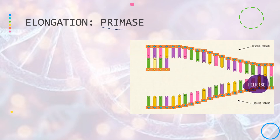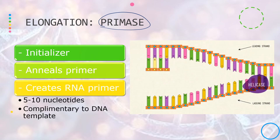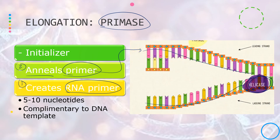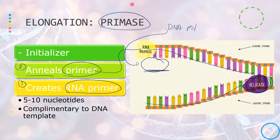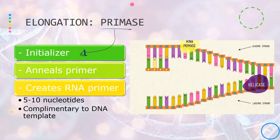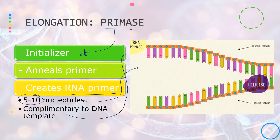The next step involves the enzyme primase, which creates an RNA primer and anneals it to the newly separated DNA strand. This RNA primer is important because the next enzyme, DNA polymerase, needs it to start replicating the DNA. That is why primase is sometimes referred to as the initializer. An RNA primer is usually made up of 5 to 10 nucleotides and is complementary to the template DNA strand.